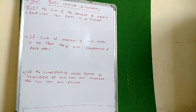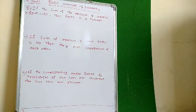Converse means reverse. We have already done it in the exercise as well. If the sum of the measure of angles in a figure is 180, then the figure is a triangle. This is the given question.